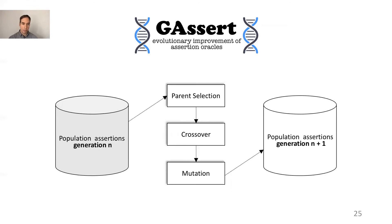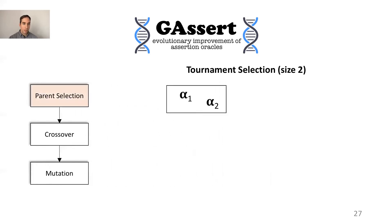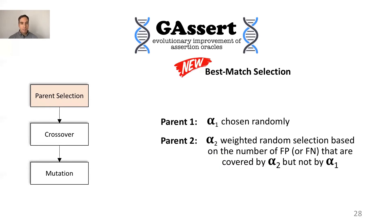Then it performs the classical evolutionary algorithm that works in three steps: parent selection, crossover, and mutation. J-Assert repeats these three steps until the population at generation N plus one is full. We use tournament selection with size two, which randomly picks two assertions alpha1 and alpha2. The fitter one is the winner of the tournament and is selected as the first parent. And it does the same another time to select the second parent.